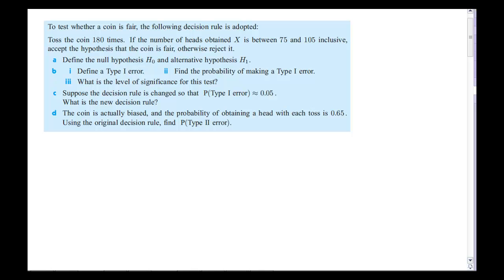For example, this first one right here, we're testing a coin. Now the coin is the normal example of a binomial, either it's heads or it's tails, yes or no. Alright, so we're going to be tossing this coin 180 times. If the number of heads X is between 75 and 105, then we accept a hypothesis that the coin is fair, otherwise we reject it.